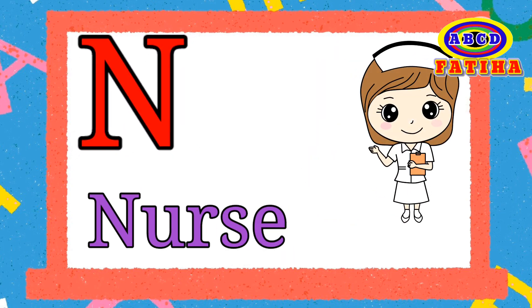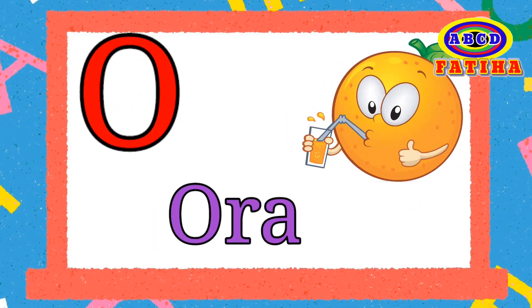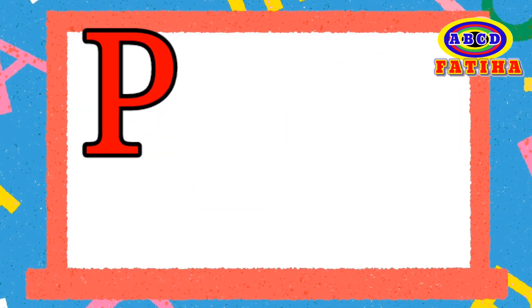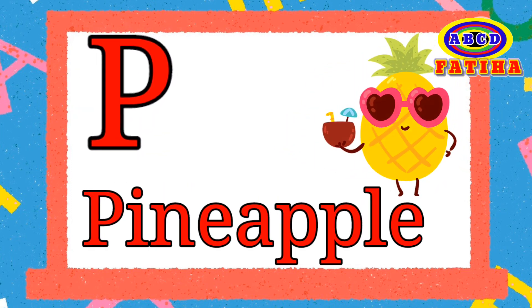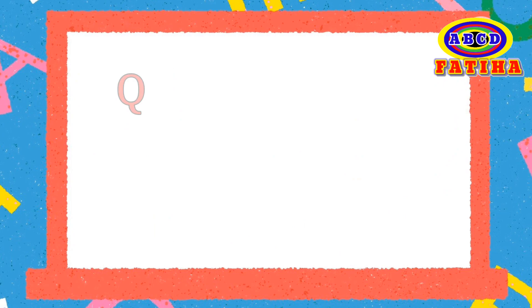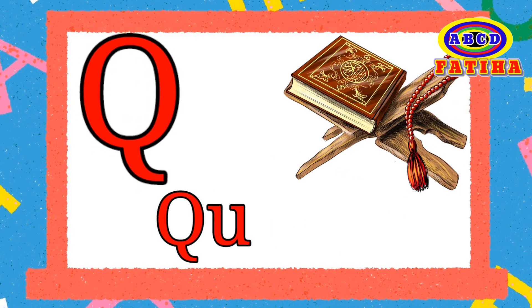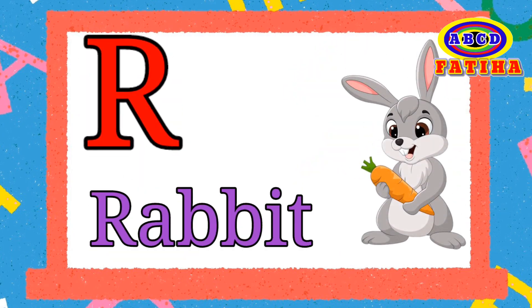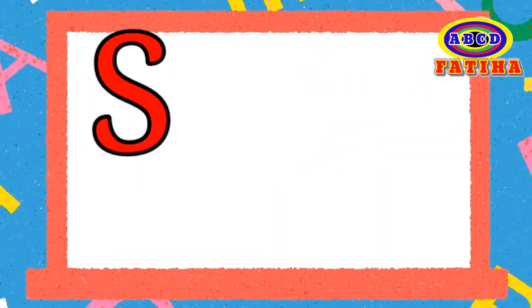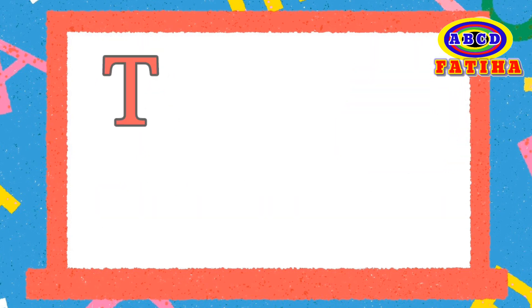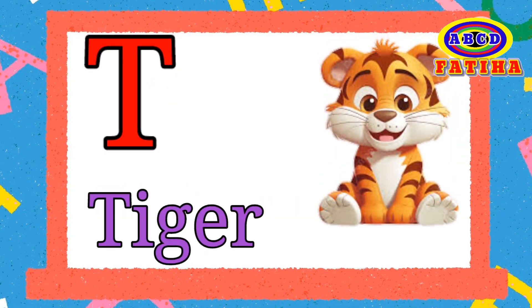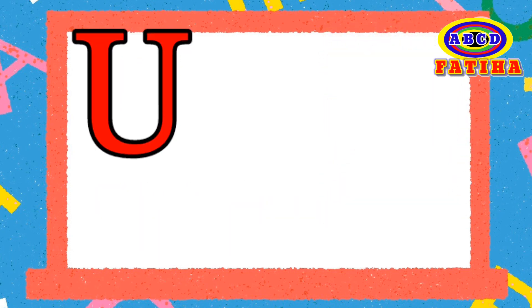N for Nars. O for Orange. P for Pineapple. Q for Quran. R for Rabbit. S for Snake. T for Tiger.